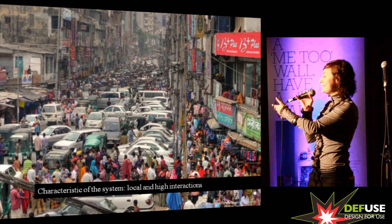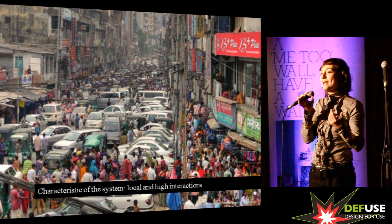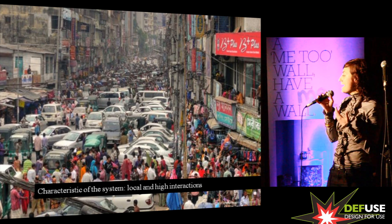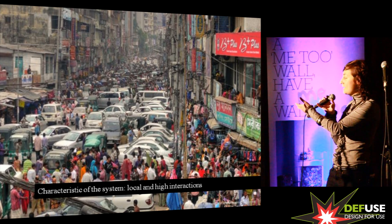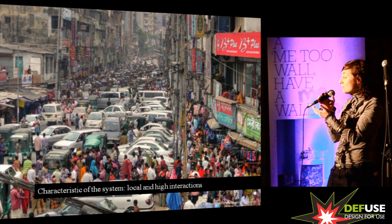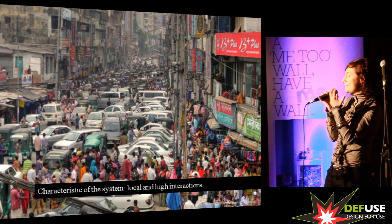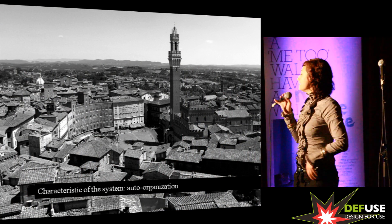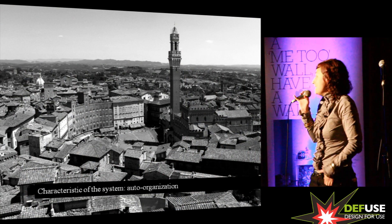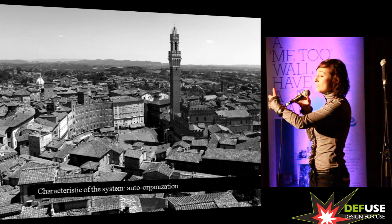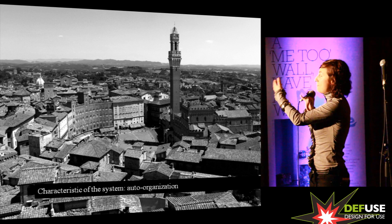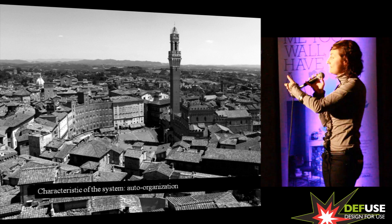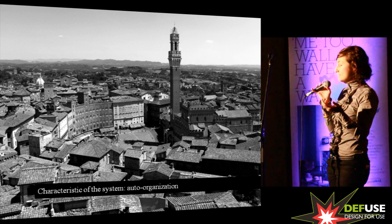We can start with the characteristics of the system. Local interaction: the systems are characterized by local interaction between components that are not aware they are becoming part of a whole, of something larger. The self-organization of the system is important. All these images are part of an organized system — like an urban system, or bees, or a flock.